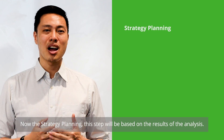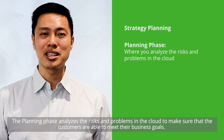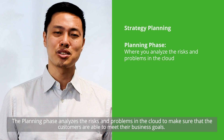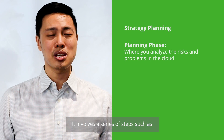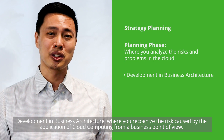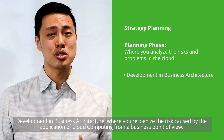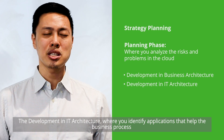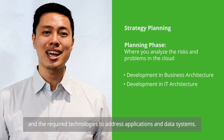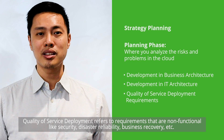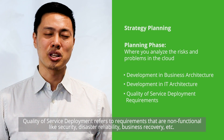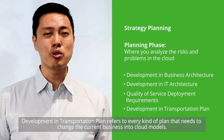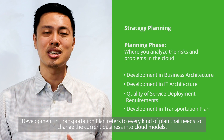The planning phase analyzes the risks and problems in the cloud to make sure customers are able to meet their business goals. It involves a series of steps such as: development and business architecture, where you recognize the risk caused by the application of cloud computing from a business point of view; development and IT architecture, where you identify applications that help the business process and required technologies to address applications and data systems; quality of service deployment, referring to non-functional requirements like security, disaster reliability, and business recovery; and a development and transportation plan that covers every kind of plan needed to change the current business into cloud models.